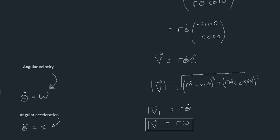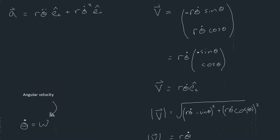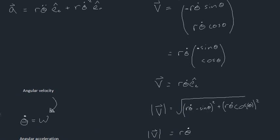Let's use this to simplify our acceleration vector further. We can rewrite it as r·α·eₜ — since alpha is theta double dot — plus, multiplying numerator and denominator by r, we get r²·θ̇²/r·eₙ-hat. Since r²·θ̇² equals (r·ω)² equals v², this becomes r·α·eₜ plus v²/r·eₙ-hat.